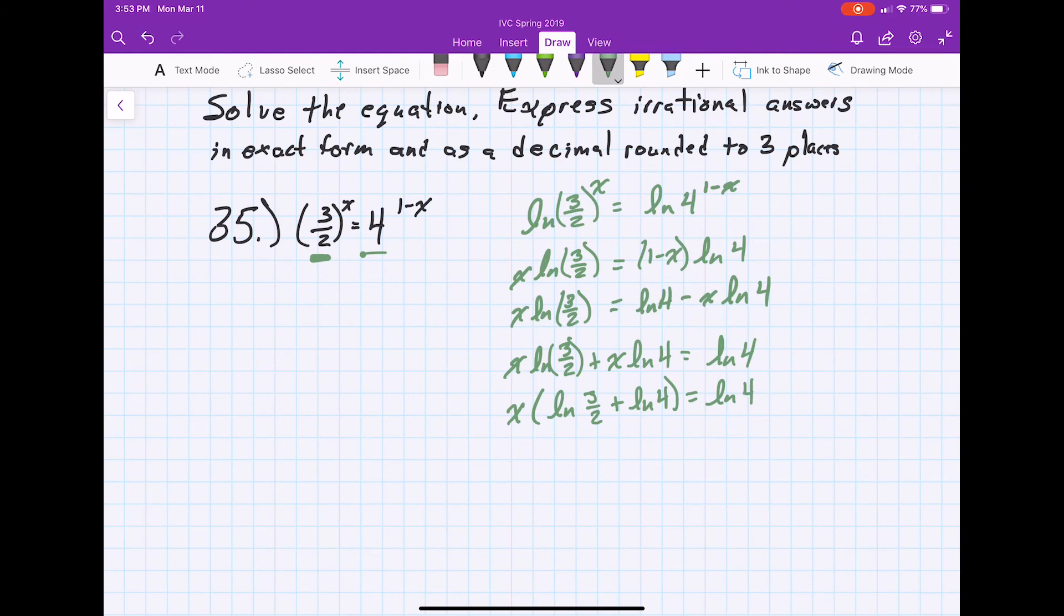Now we can divide by ln 3 halves plus ln 4, leaving x by itself. So we have x equals ln 4 over ln 3 over 2 plus ln 4, which obviously the ln 4s would cancel and you have 1 over ln 3 halves. There's one way to look at it.